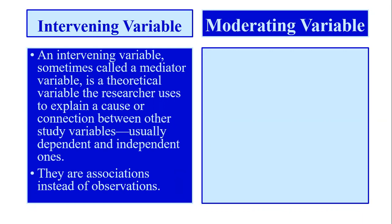We use intervening variable in our research to define or explain the cause and connection between our independent and dependent variable. For example, my topic is the relationship between transformational leadership style and employee creativity, mediated by intrinsic motivation. So I choose intrinsic motivation as the mediating or intervening variable, and I check the effect of intrinsic motivation on the other two factors: transformational leadership and employee creativity.